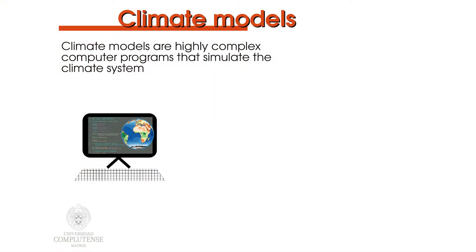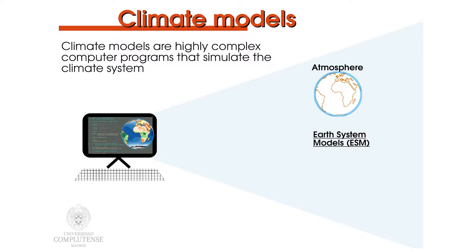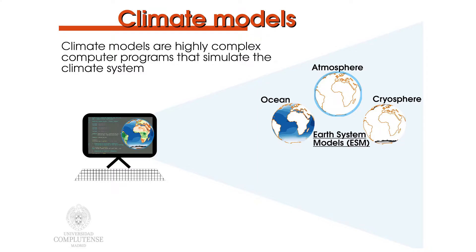In a nutshell, a climate model is a highly complex computer program that simulates the climate system. The most comprehensive ones are called Earth system models and take into account climate-relevant systems such as the atmosphere, ocean, cryosphere, land, biosphere, and processes like the carbon cycle.